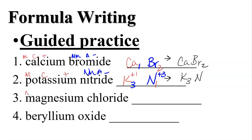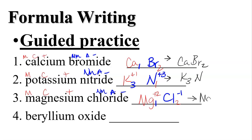Magnesium chloride: magnesium is a metal, a cation, positive. Chloride is a nonmetal, an anion, negative. Write Mg with a charge of plus two because it's in group two. Chloride has a charge of negative one because it's in group 17 — it wants one more electron. Crisscross: magnesium gives its two to chlorine, chlorine gives its one to magnesium — MgCl₂, magnesium chloride. Note: when the subscript is one, we don't need to write it.